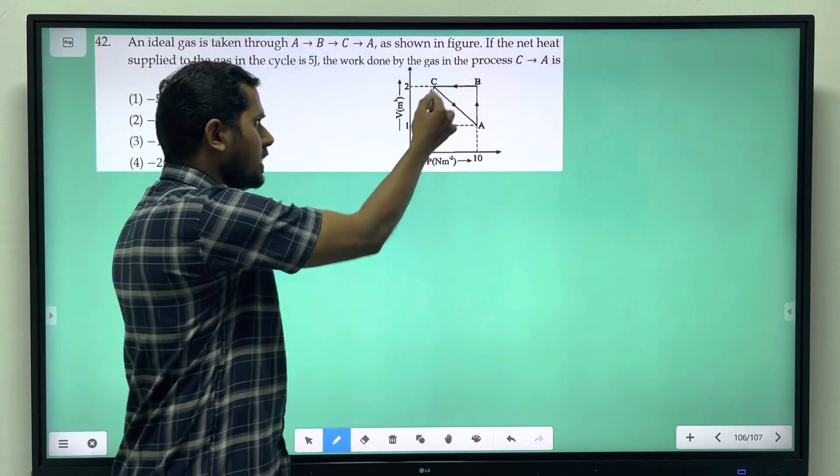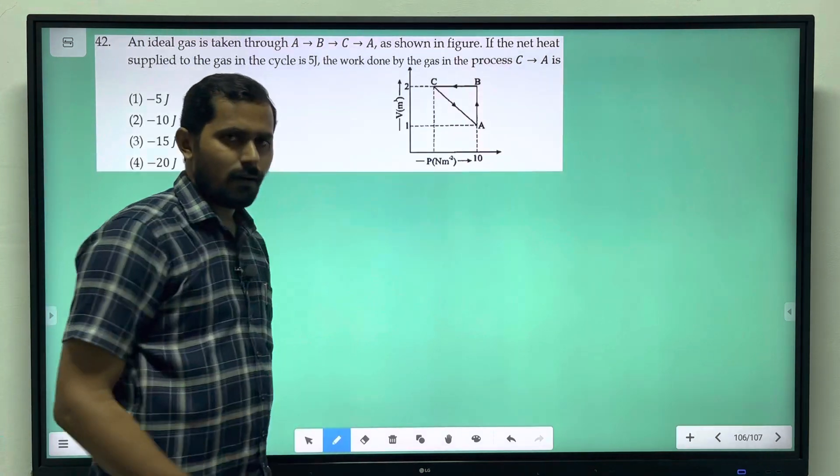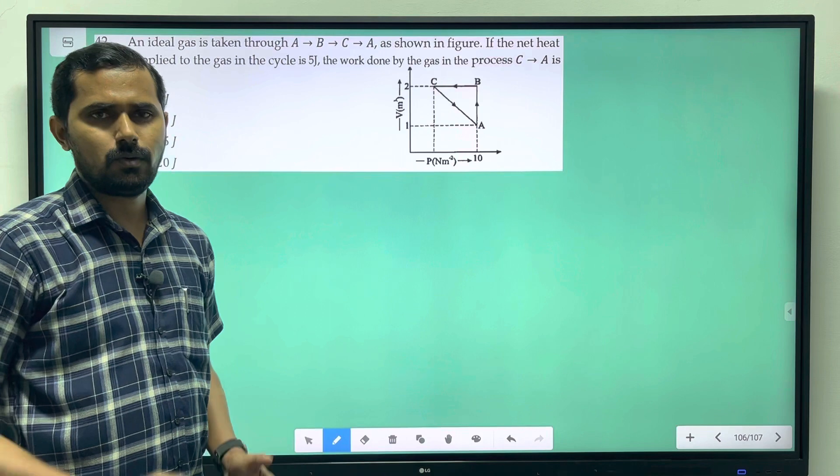So, it is one of the cyclic process PV diagrams. Usually, we have the X axis volume and Y axis pressure. We have solved this different times.